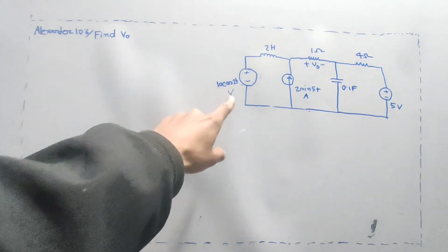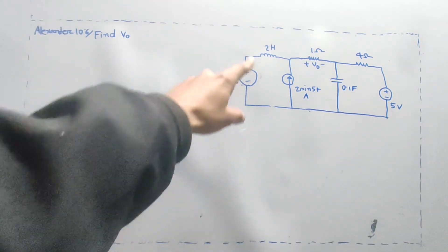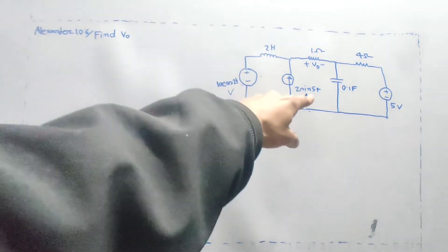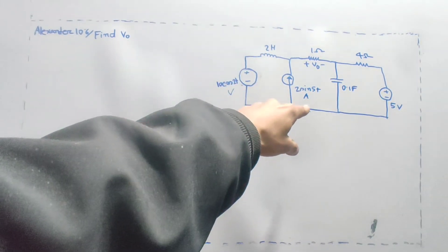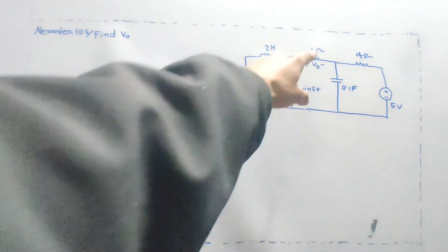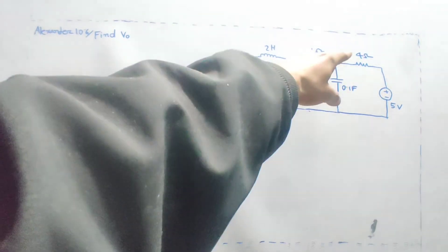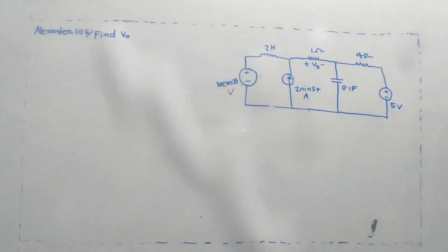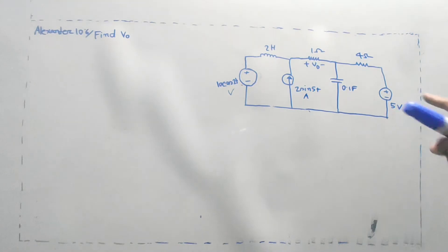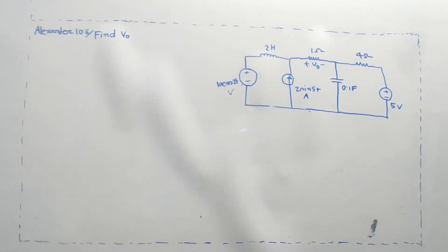The voltage source is 10 cos 2t, there is a 2 Henry inductor, and a 2 sin 5t ampere current source. V0 is across 1 ohm, with 0.1 F capacitor and 4 ohm resistor. Note that one source is DC — if you look at the angle, it is DC.